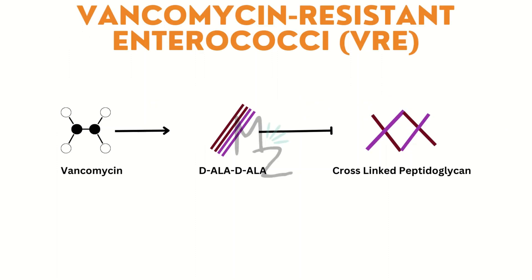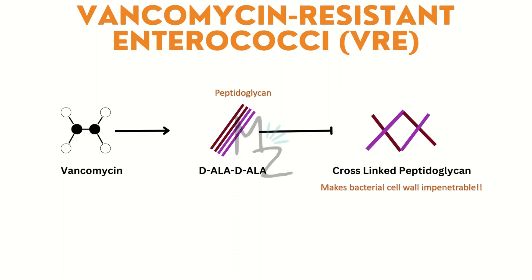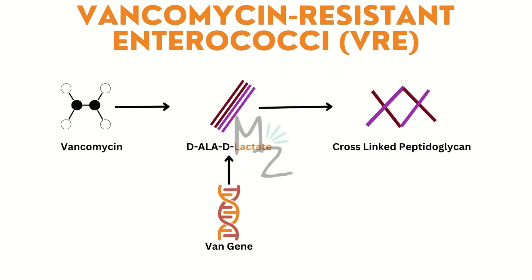Normally, the peptidoglycan D-ala-D-ala of the bacterium gets converted into cross-linked peptidoglycan, making the bacterial cell impenetrable. Vancomycin prevents that cross-linking, so the bacterium is easily killed. However, when bacteria acquire the van gene, D-ala-D-ala is converted into D-ala-D-lactate, which prevents vancomycin from acting on the cross-linked peptidoglycan. Vancomycin becomes ineffective and the bacteria ignore its effects — this is how vancomycin resistant enterococci are formed.